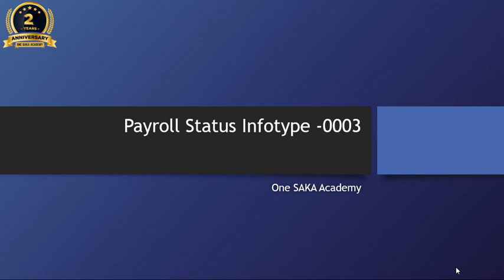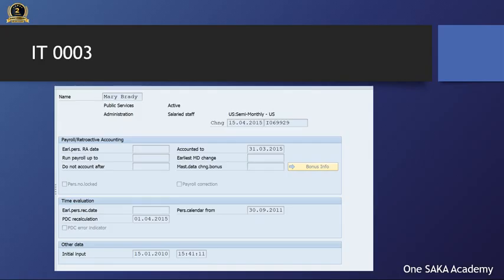Infotype 0003 is a very crucial infotype. It gets created automatically by the system and cannot be deleted. The time constraint for this infotype is one. Let's discuss about the earliest personal retro accounting date.